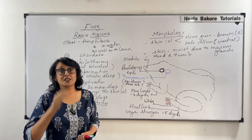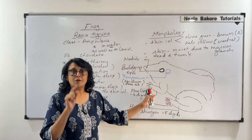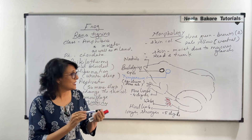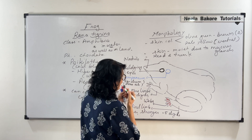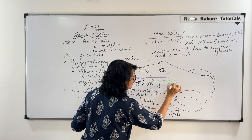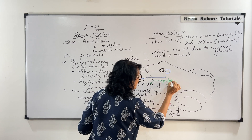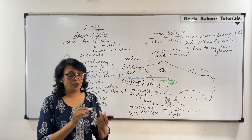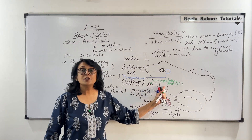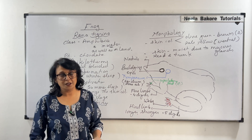Male and female frogs can be easily distinguished — they show sexual dimorphism. In the male frog, the first digit of the forelimb has a paddy structure on the ventral side known as the copulatory pad or nuptial pad. This is found only in male frogs and is used to hold the female during copulation.